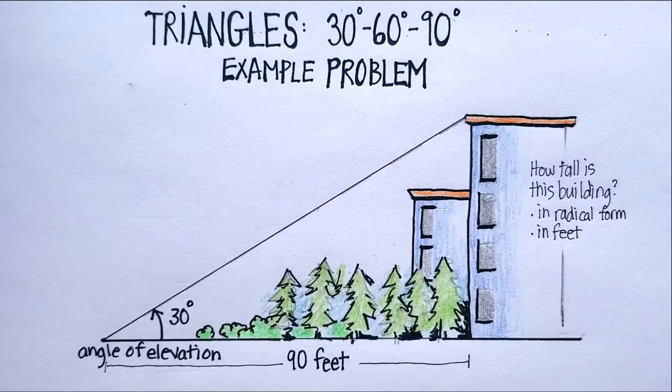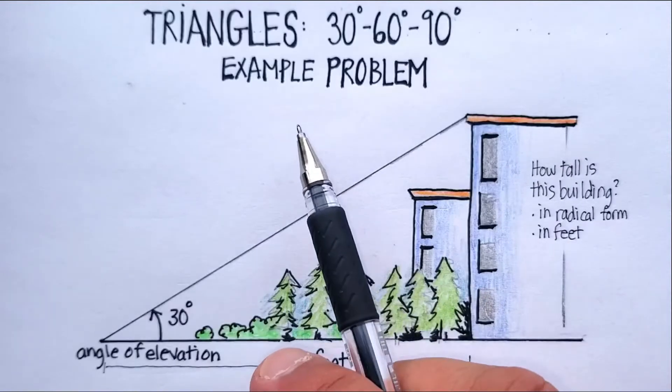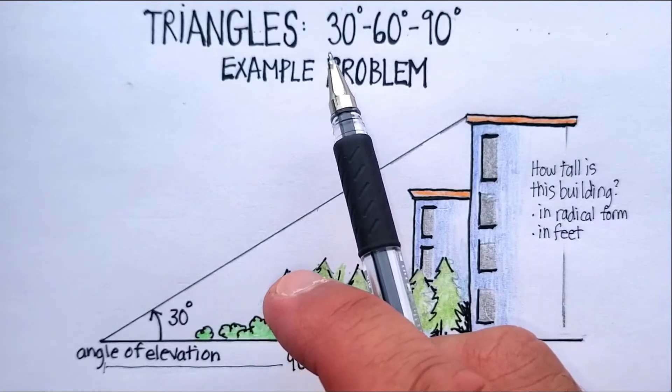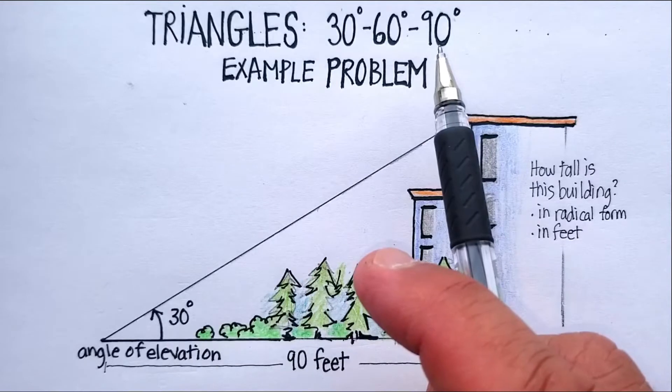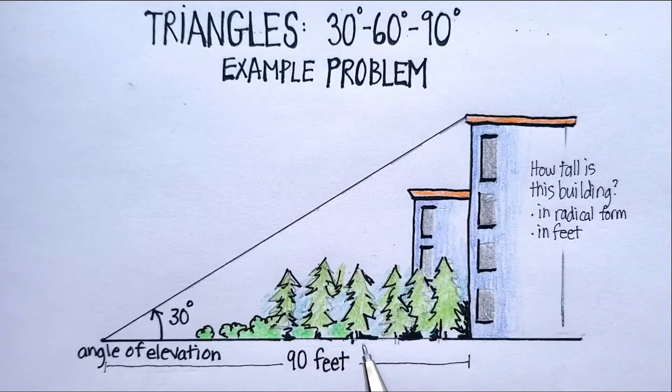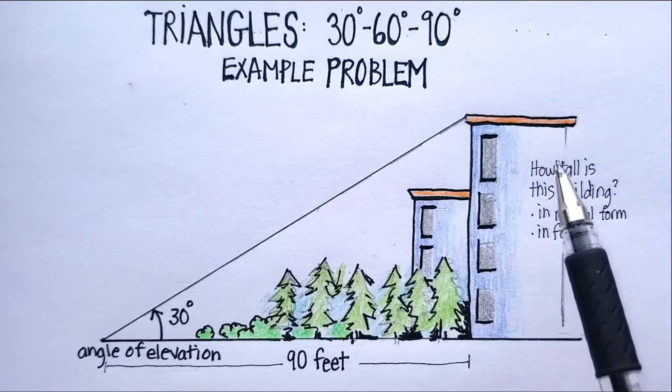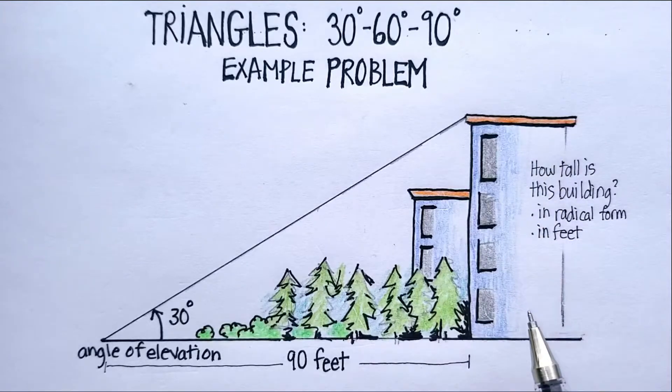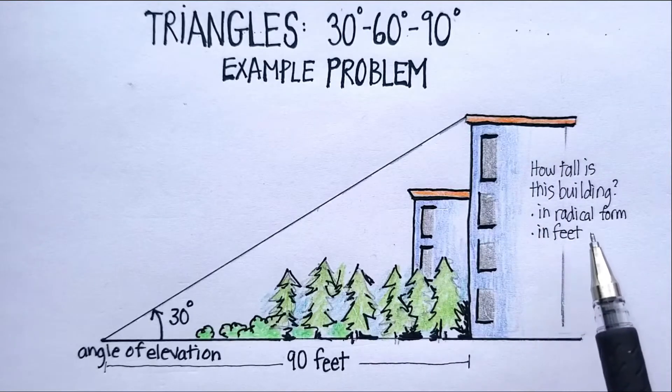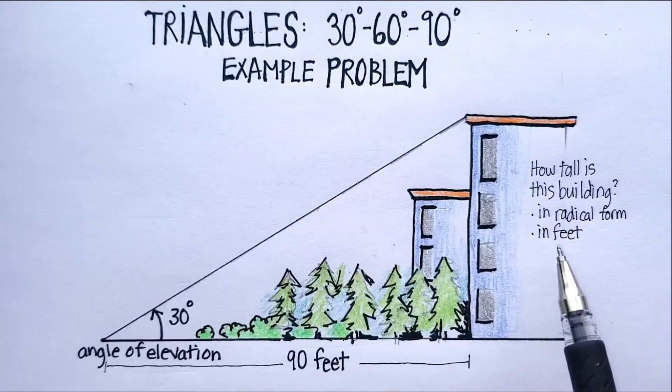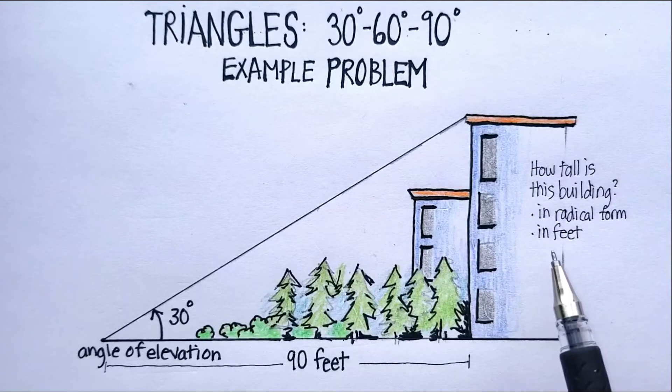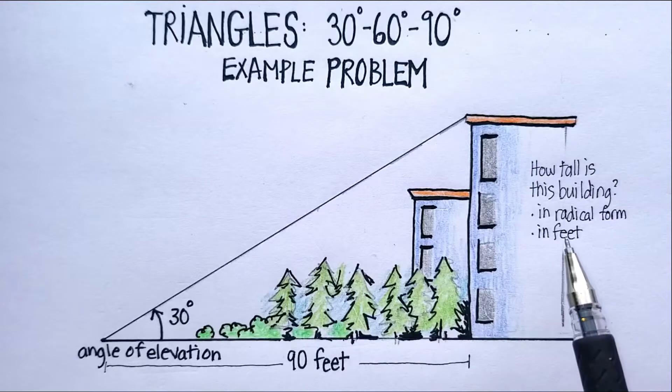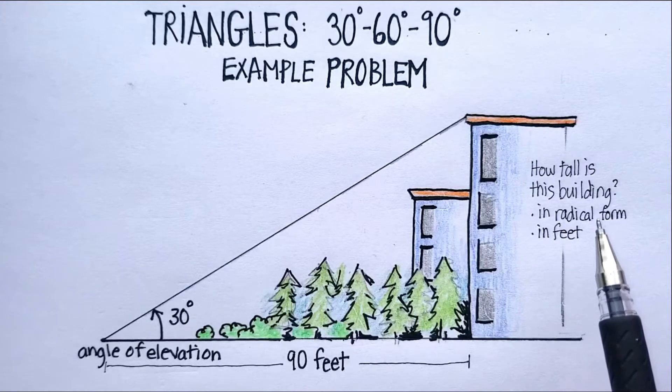In this video we're going to go over an example problem using a special triangle known as a 30-60-90 degree triangle. The problem is this: we're going to try to figure out how tall this building is in both radical form and in feet, because it's very difficult to say a building is something like radical feet high. So we're going to convert both, but we're also going to have the radical form.